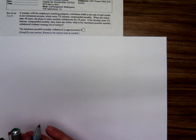This is Anthony Percella doing some business math with my business math class, Math 1324. We're doing some financial math today and doing a little retirement planning problem here. A woman with her employer's matching program contributes $400 at the end of each month to her retirement account, earning 7% interest compounded monthly. When she retires after 49 years...